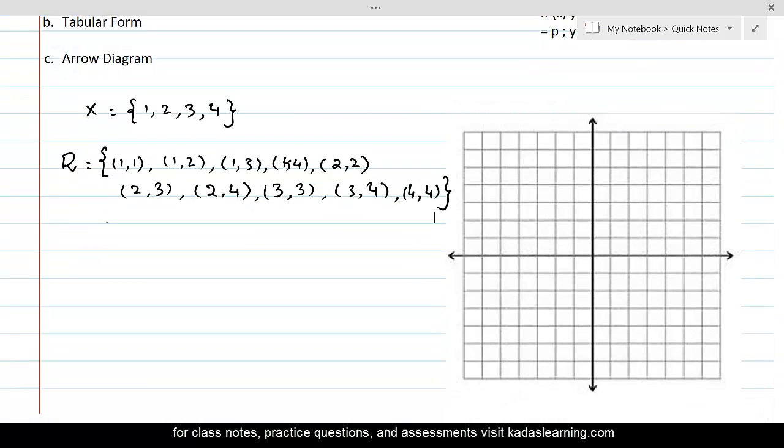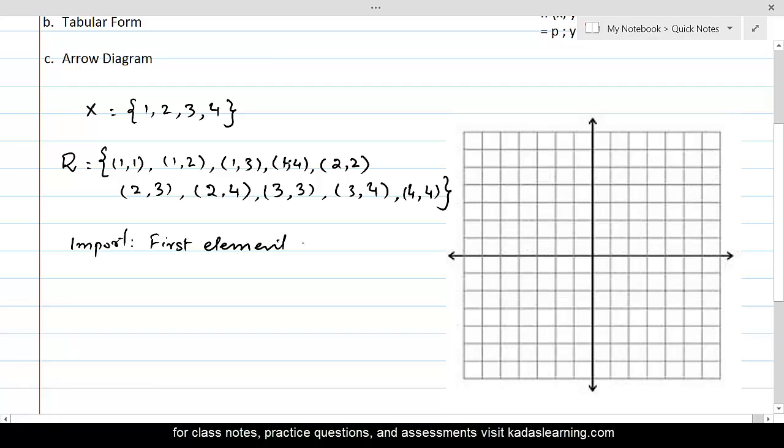Remember this thing, important. Let me write it down here. Important. The first element of every ordered pair is always graphed on the x-axis.